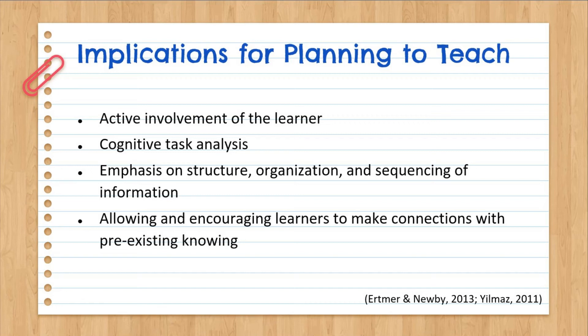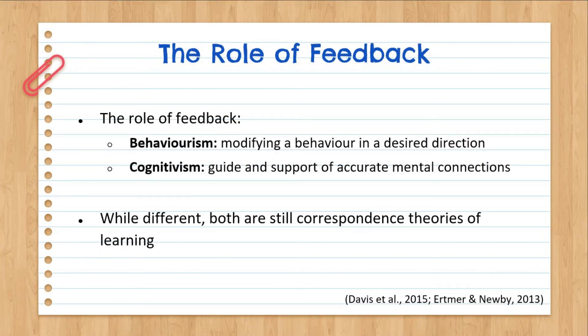This ties in with the attention we pay to structuring, organizing, and sequencing information so it's meaningful. Another important implication is the role of feedback and how it differs from a cognitivist versus a behaviorist perspective. While feedback in behaviorism tries to modify behavior in a desired direction, within cognitivism feedback is meant to guide and support accurate mental connections. Keep in mind, both are correspondence theories of learning — measuring how accurately the learner's internal interpretation matches the objective external world.